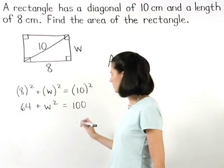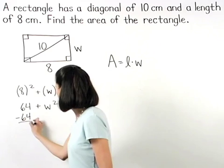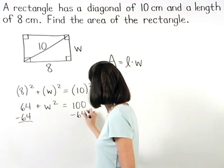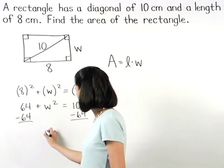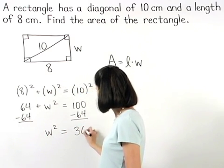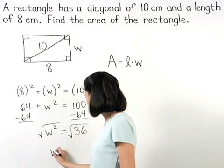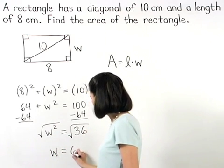Subtracting 64 from both sides gives us W squared equals 36. And square rooting both sides, we find that W equals 6.